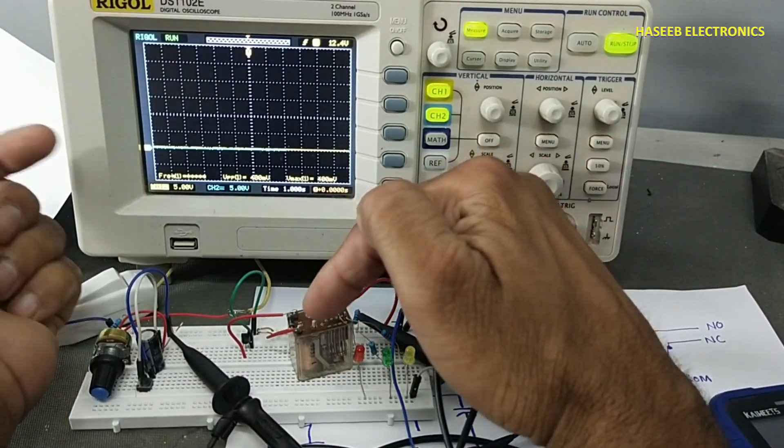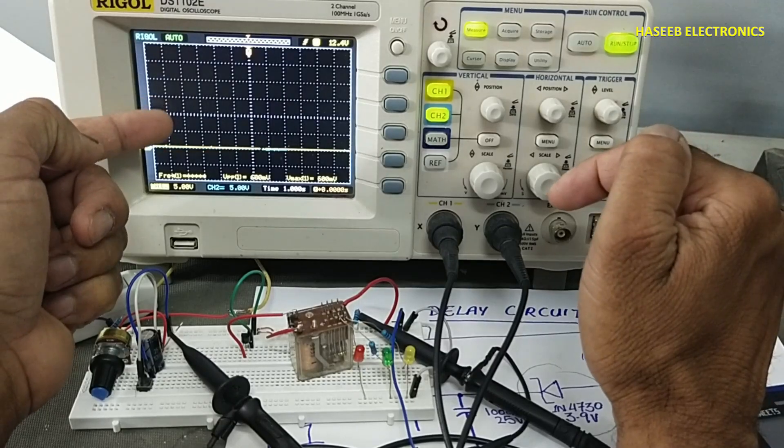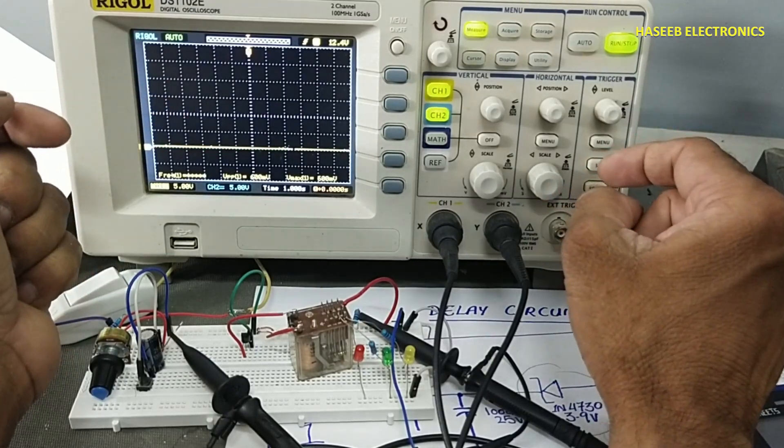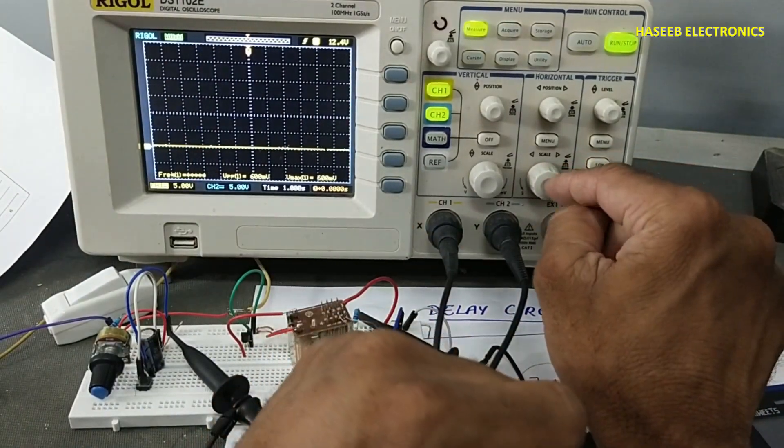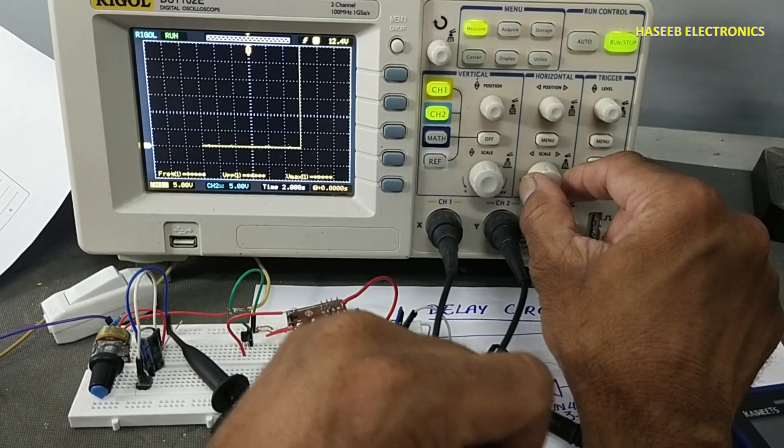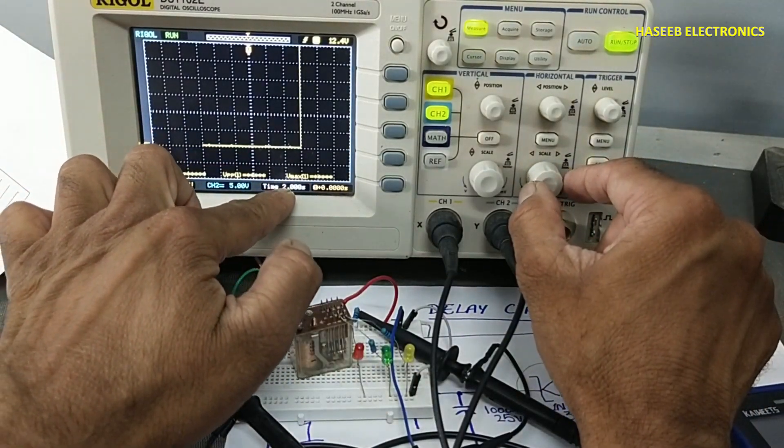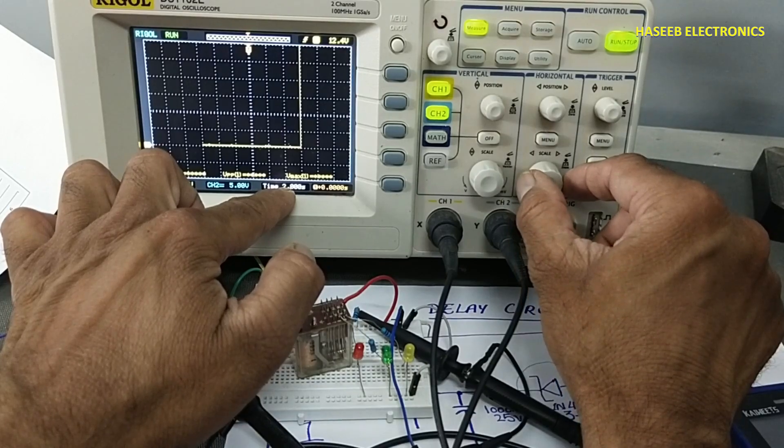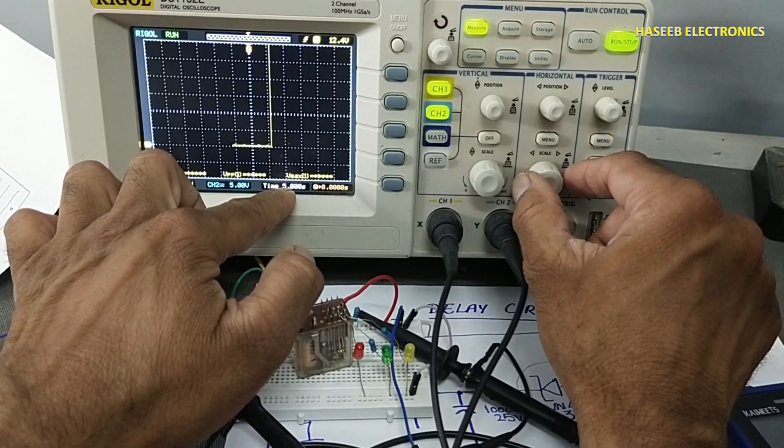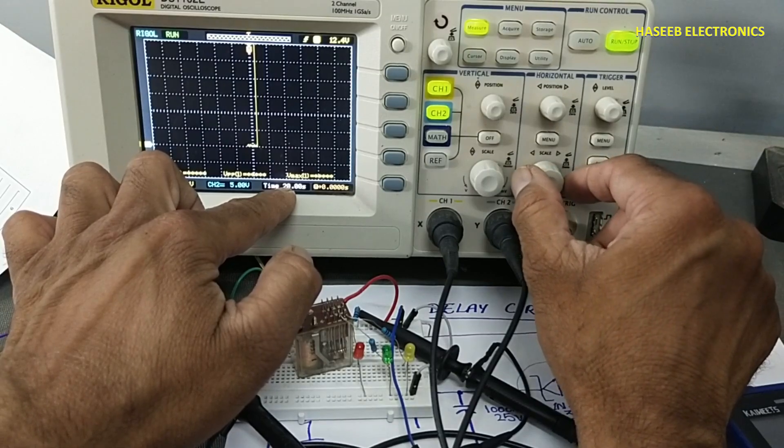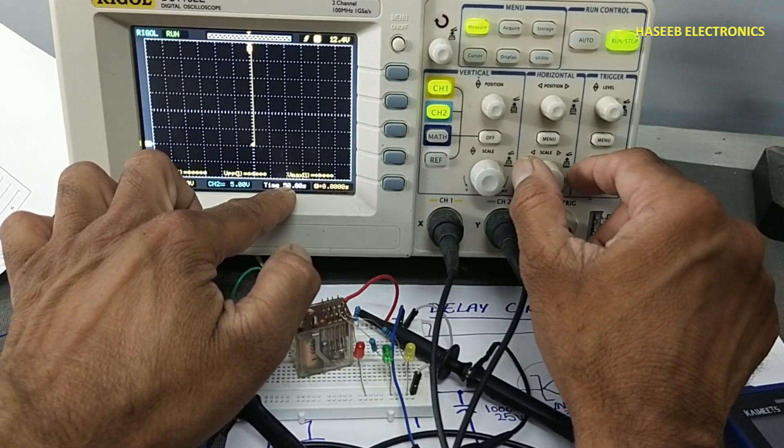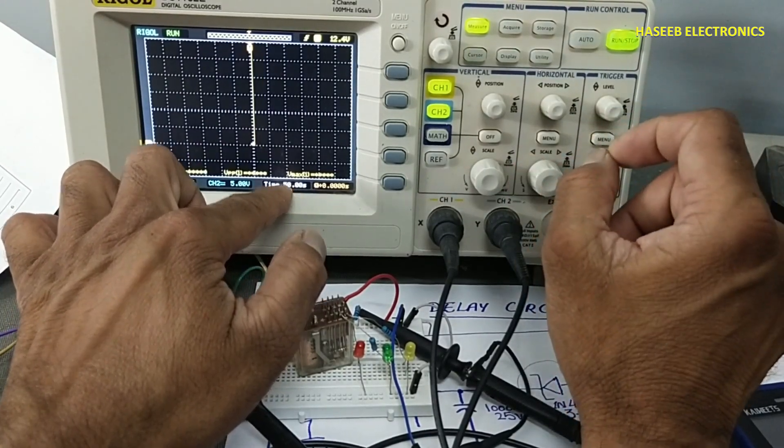Our signal is 12 volt so it will reach in this region. Now from the time division we can set 2 seconds per division, 3 seconds, 5 seconds, 10 seconds, 20 and 50 seconds.